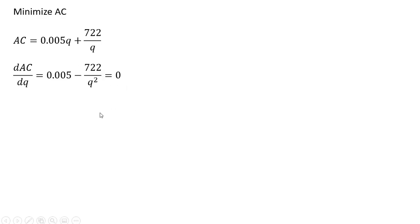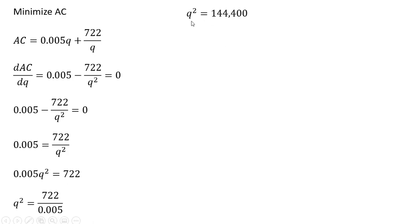We're going to solve this equation now for q. Moving some things around. Cross-multiplying this q squared, dividing through by 0.005, and now taking the square root of both sides, q equals 380. When q is 380, average cost will be minimized. So plugging this 380 back into the average cost equation, we get an average cost of $3.80.